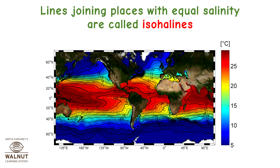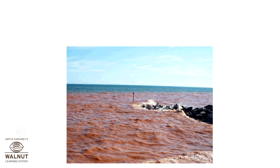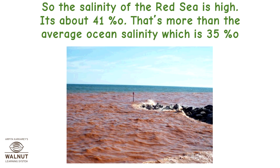Lines joining places with equal salinity are called isohalines. The sun shines brightly on the Red Sea throughout the year. There is not much rainfall there and not too many rivers flow into it. So the salinity of the Red Sea is high — it's about 41 per 1000, which is more than the average ocean salinity of 35 per 1000.